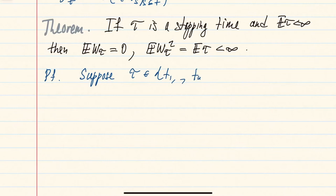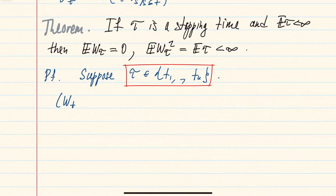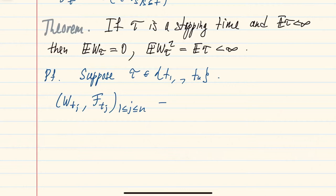We will consider the case when the stopping time takes finitely many values. The main idea is really contained in this step; the following steps, which I will refer to the notes, are basically reducing to this case first by a truncation argument and then by a standard discretization argument where you discretize your stopping time by rounding up to dyadics. In this case, the Brownian motion at these finitely many times forms a martingale with respect to this sequence of sigma-algebras, which follows from the independence of increments.